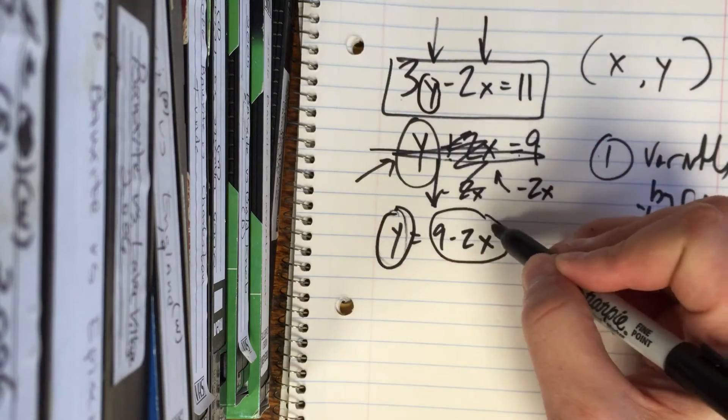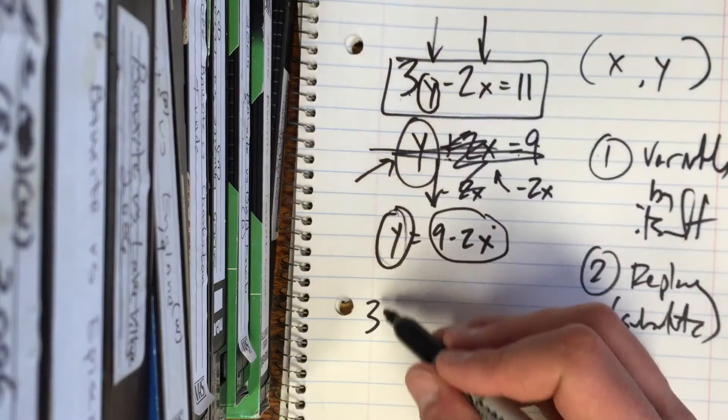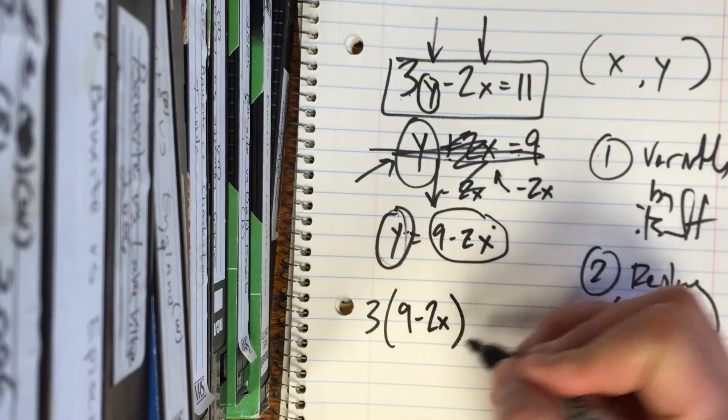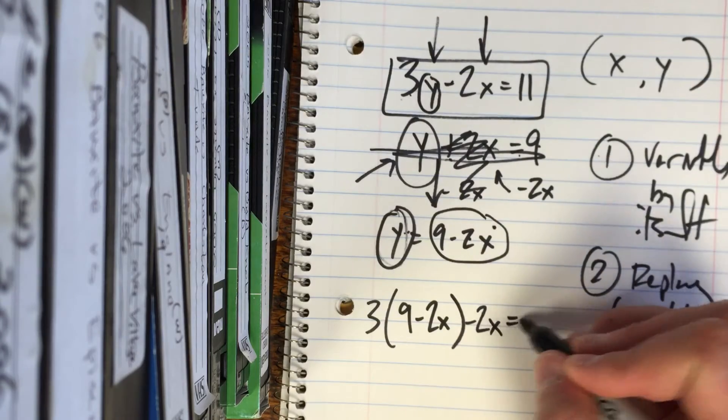So I know y is the exact same as this, so I'm going to rewrite this equation. 3 times, and I'm replacing y with what y is equal to, 9 minus 2x. Then we're going to carry everything else out like it looks. Minus 2x equals 11.